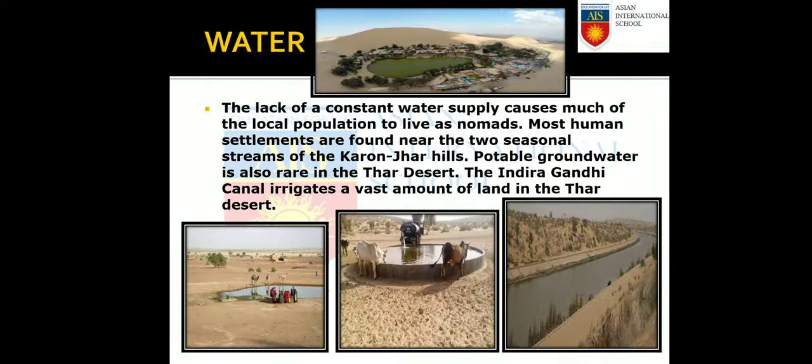The lack of constant water supply causes much of the local population to live as nomads. Most human settlements are found near the two seasonal streams of Karam Jhar Hill. Potable groundwater is also rare in the Thar Desert. The Indira Gandhi Canal, shown in the picture, irrigates a vast amount of land in the Thar Desert.